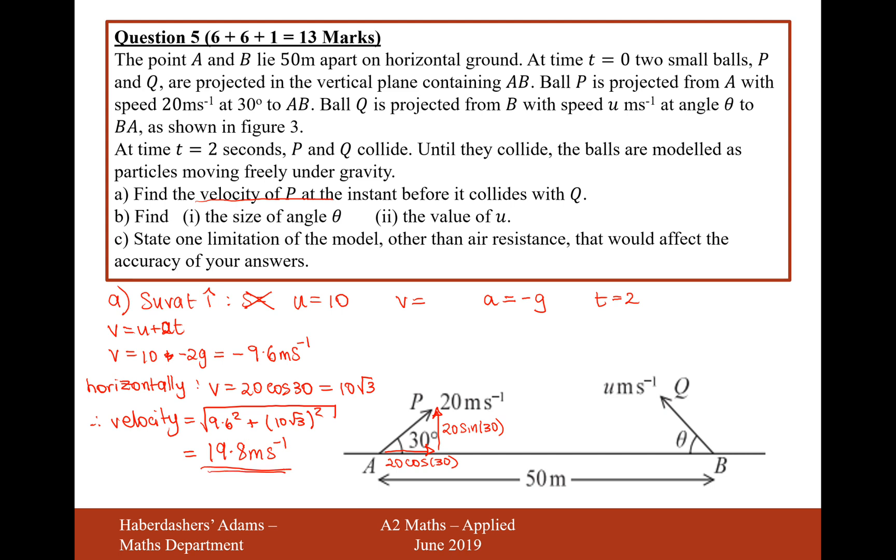We now need to work out the kind of bearing or the angle to the horizontal it's travelling at. It looks like it is going 10 root 3 to the right, and it's going to be travelling at that instant minus 9.6 downwards. If we now work out what this angle to the horizontal is there, that's going to be a calculation of tan inverse opposite, which will be just 9.8, and then we'll refer to it as a negative over 10 root 3. Let's just do that on the calculator.